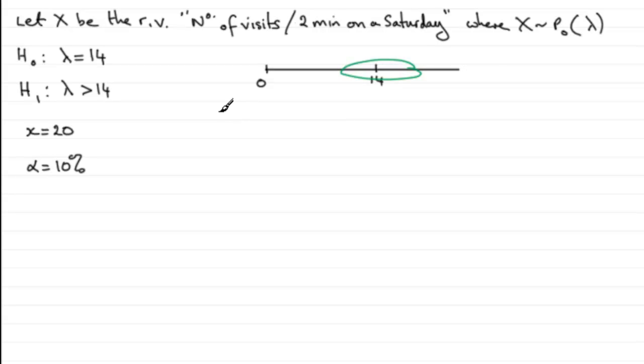And so I'm just going to put down here that we're going to reject H0 if the probability that X is greater than or equal to 20 given that H0 is true, that is using the mean lambda equaling 14, turns out to be less than or equal to the significance level here of 10%. In other words, less than or equal to 0.10.